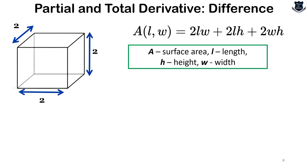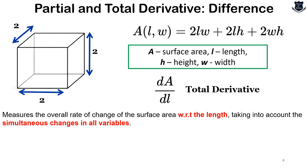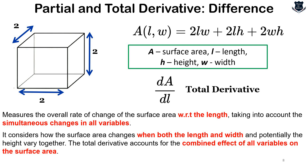Now, looking at the same example for total derivative: dA by dl gives the overall rate of change of the surface area with respect to the length, taking into account the simultaneous changes in all variables. Because it takes all variables into account, it measures the overall rate of change — not a specific one. It considers how the surface area changes when length, width, and potentially also height vary together, accounting for the combined effect of all variables.